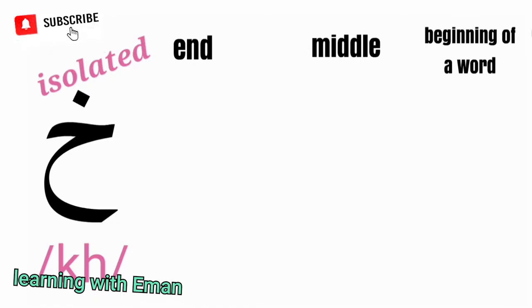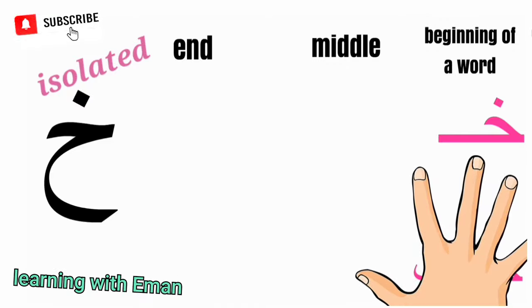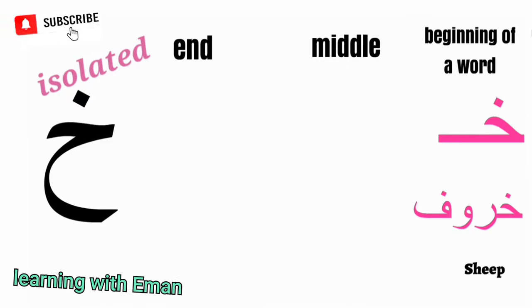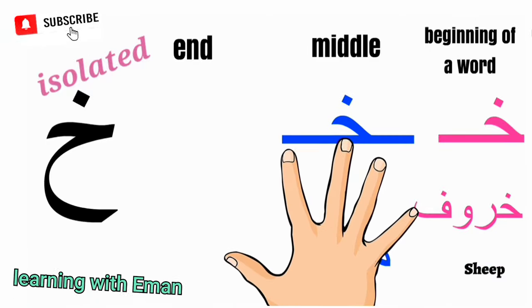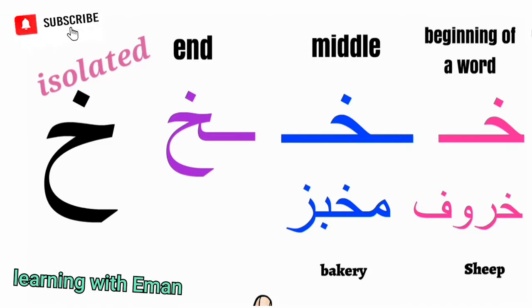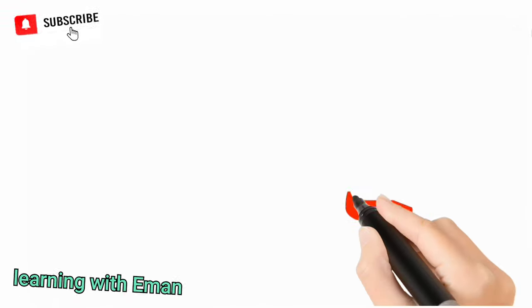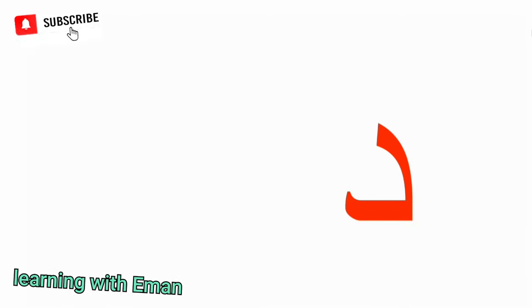Kha corresponds to the KH sound. At the beginning of a word, like in a word meaning sheep. At the middle of a word, like in a word meaning bakery. At the end of a word, like in a word meaning watermelon.